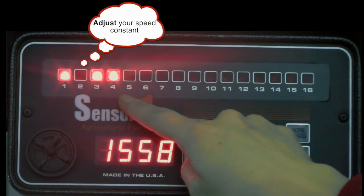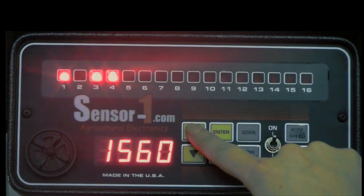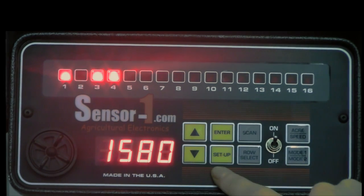Now lights 1, 3 and 4 will be on. This step will allow you to adjust your speed constant by using the arrow keys.